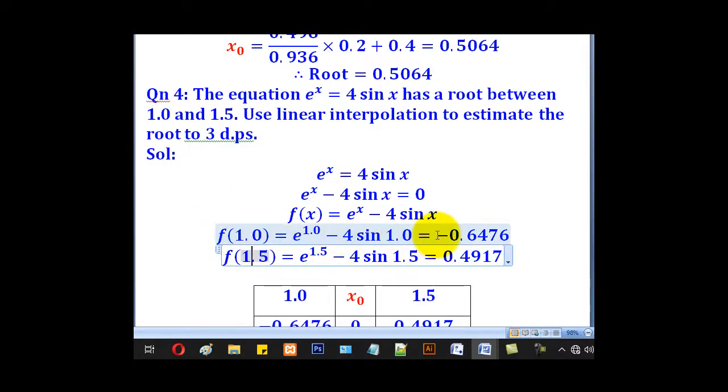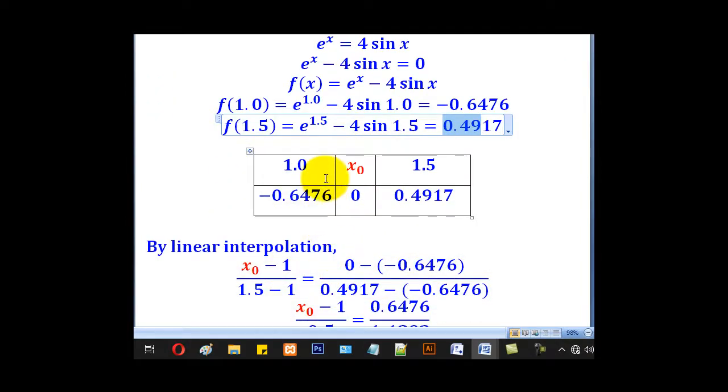For f(1), it will be negative -0.6476. For f(1.5), it will be 0.4917. Come and draw a table.